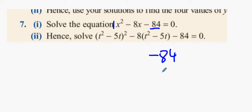You're then trying to think of two numbers that multiply to give you minus 84, but will add to give you minus 8. Minus 14 and plus 6 is a good choice.